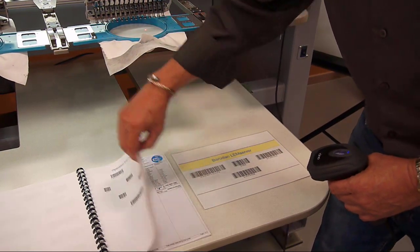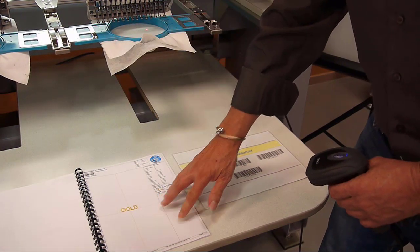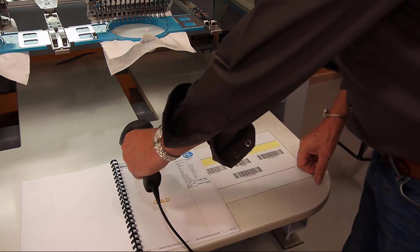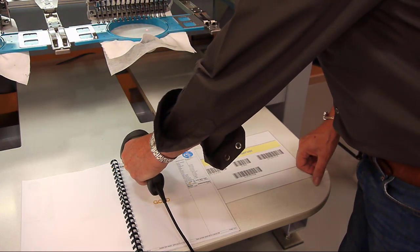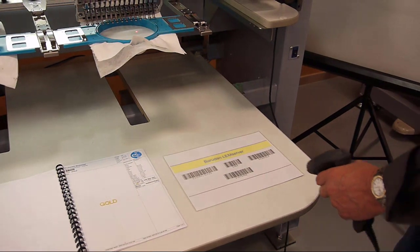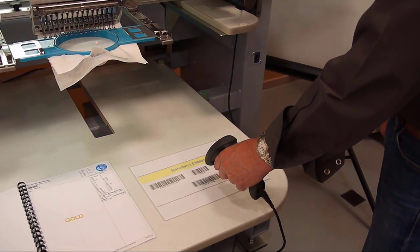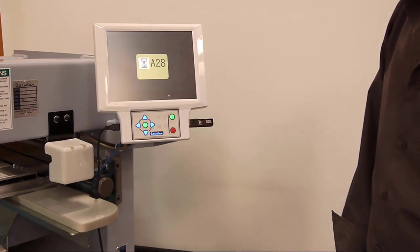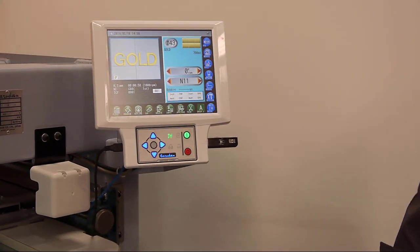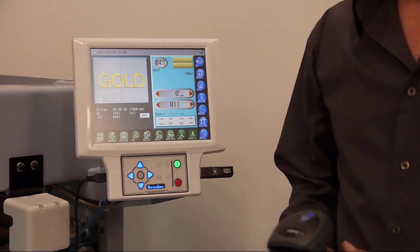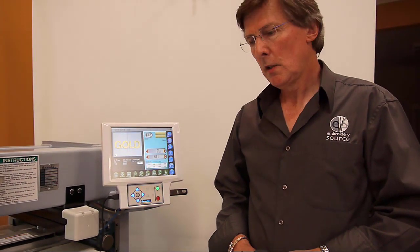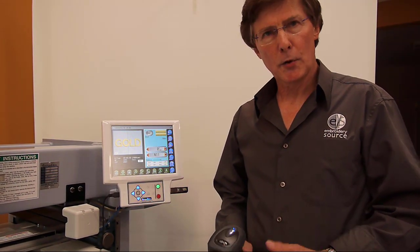We have here a Wilcom instruction sheet. That design is called gold, and then we click OK and one more time. That function will search every design on the USB memory device and find exactly that design. So if your machine operators have the right Wilcom instruction sheet, they can't download the wrong design into the machine's memory.